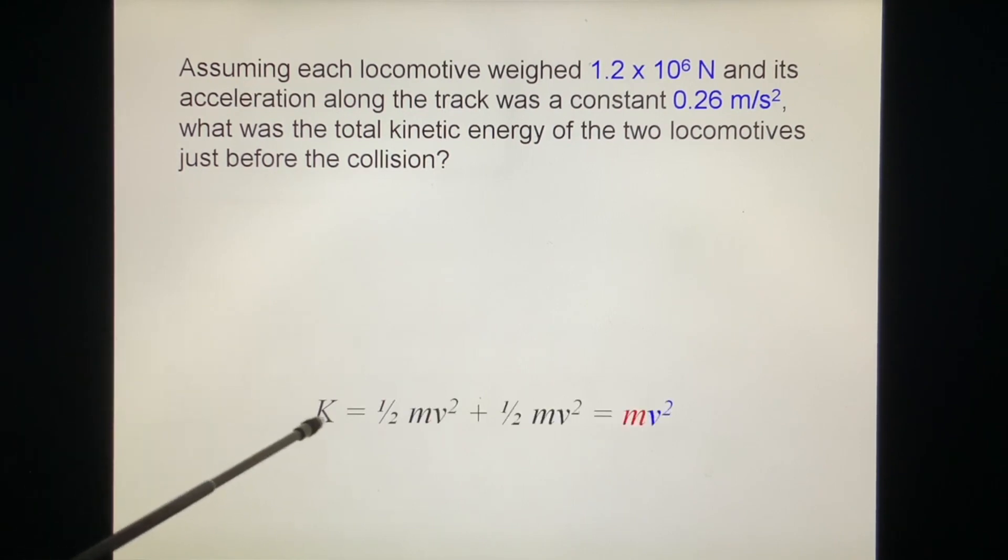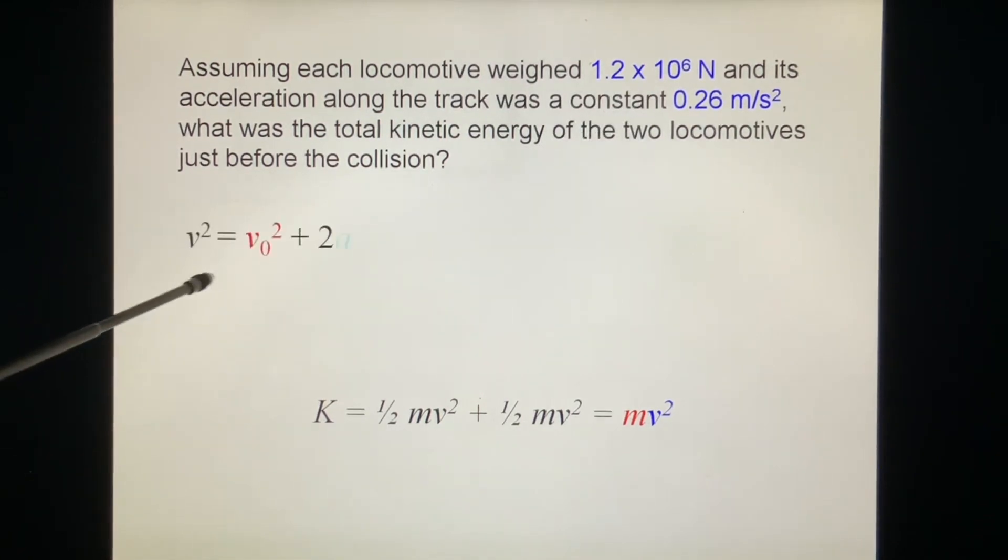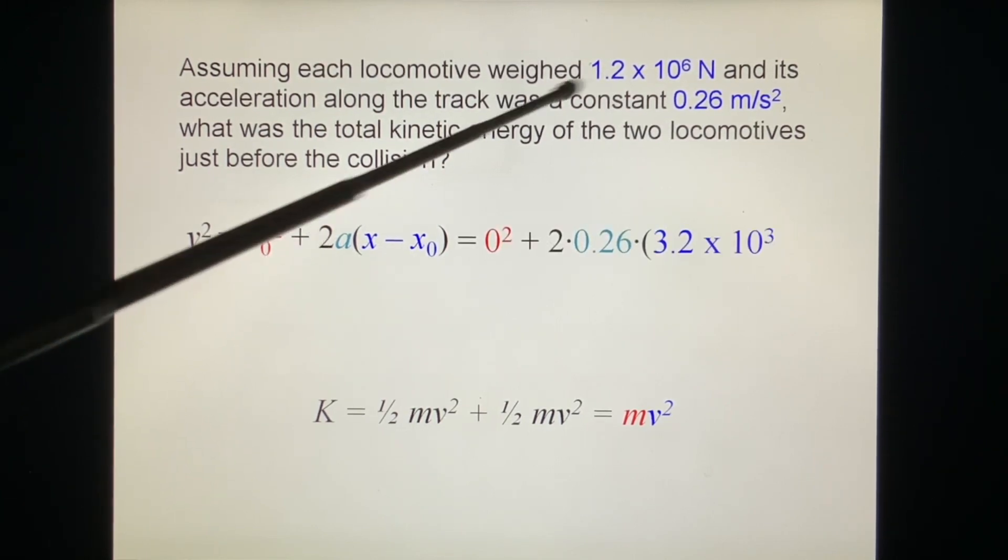Now, the kinetic energy is the sum of these two locomotives, so equal to mv squared. We find v. Because this is a constant acceleration motion, we use this formula: v squared equals v0 squared plus 2as. This is what we want to find. v0 squared is 0, starting from rest. a is 0.26.